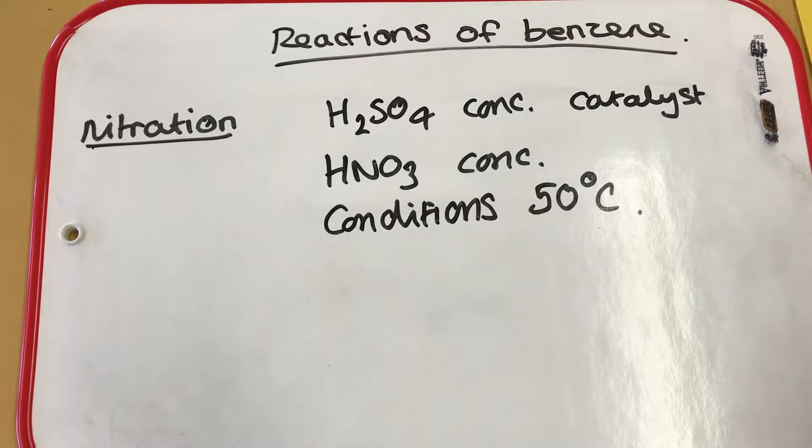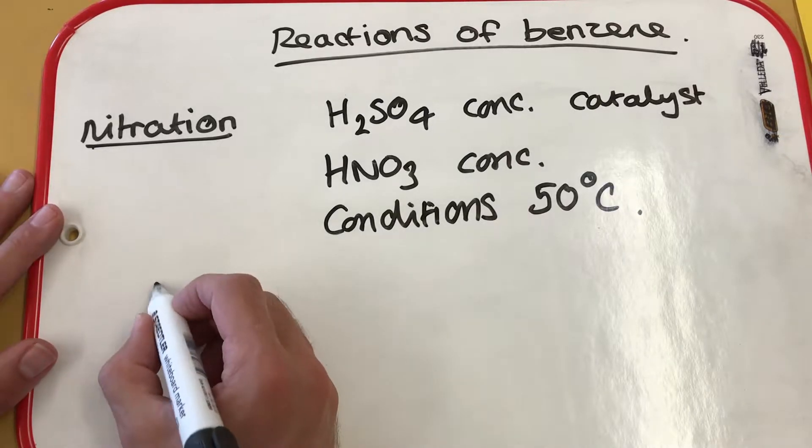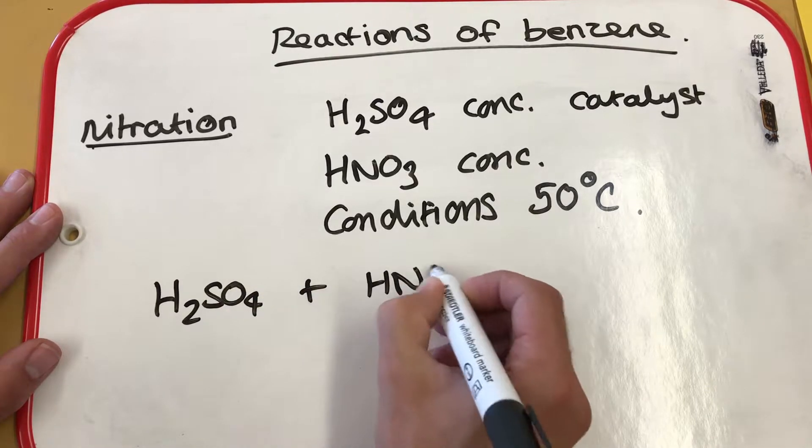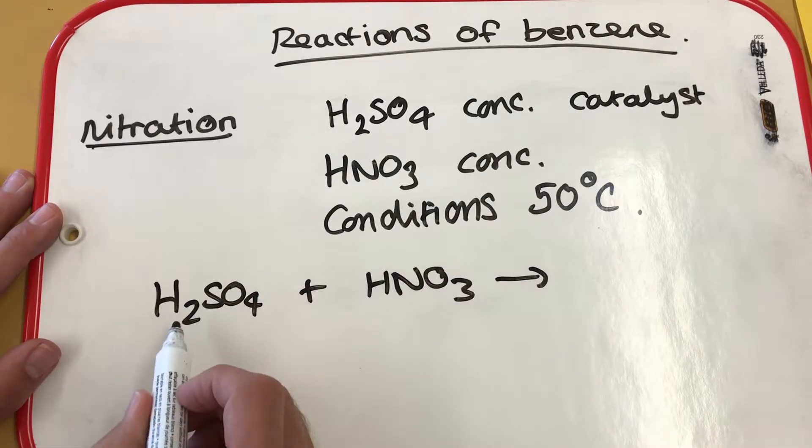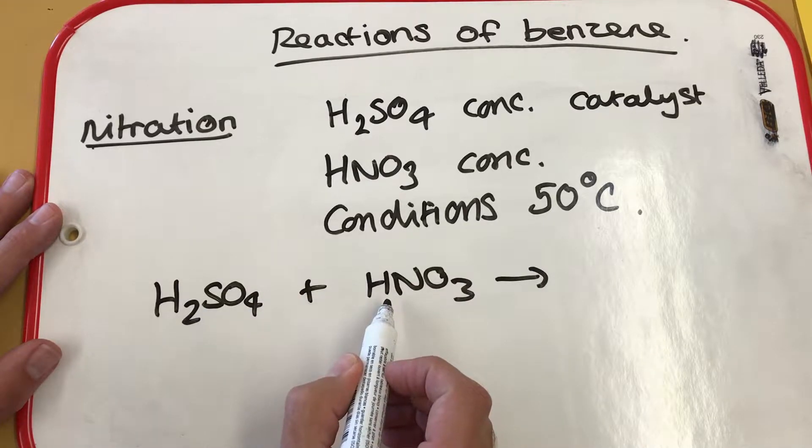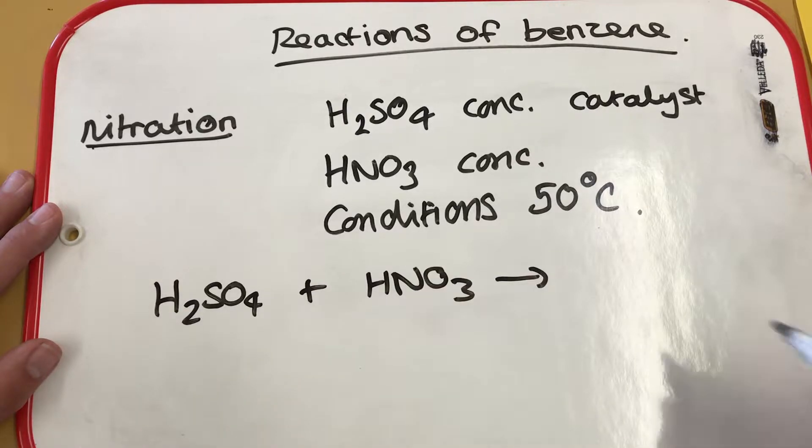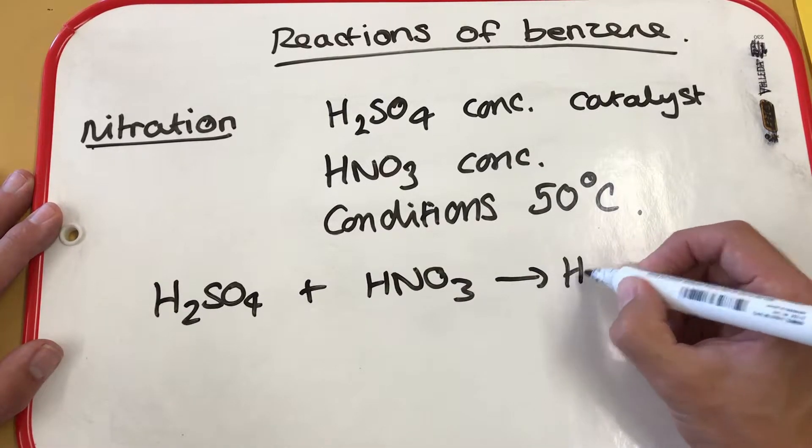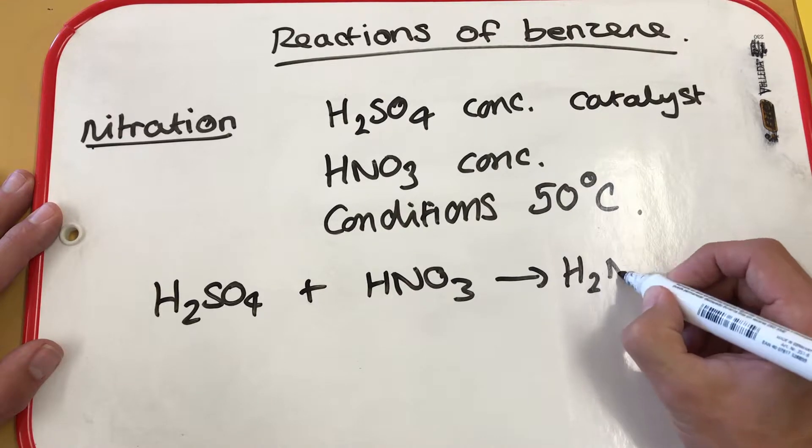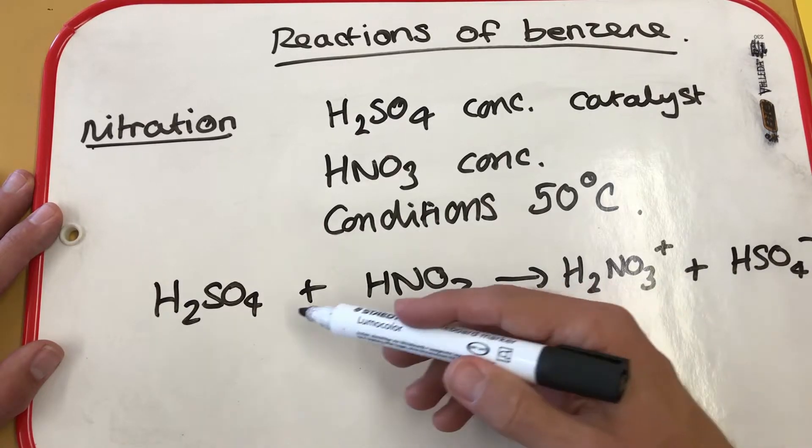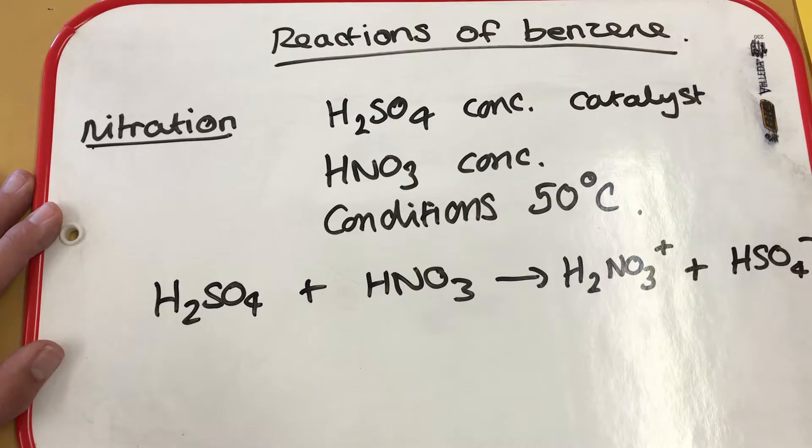So first of all what you need to do is show how the electrophile is actually formed. Now the way this happens is sulfuric acid will react with the nitric acid. Now because the sulfuric acid is a stronger acid than the nitric acid, the sulfuric acid will donate a proton to the nitric acid. This forms H2NO3+, and HSO4-. So you can see that the sulfuric acid has transferred a proton to the nitric acid.